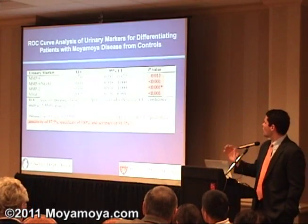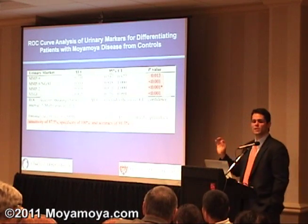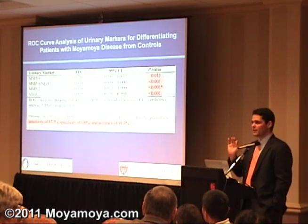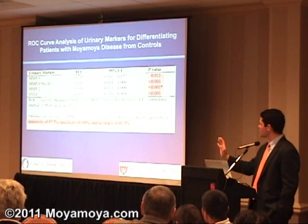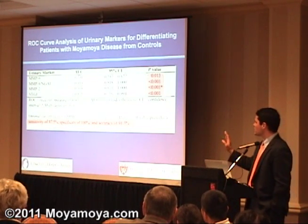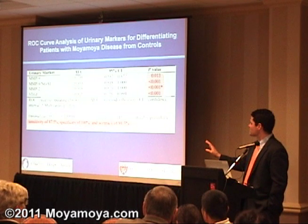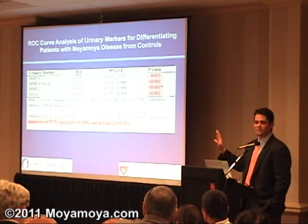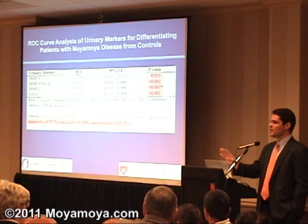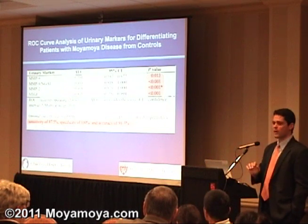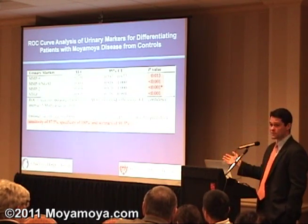One thing that we found is that just by using a urine test, when you have the technicians blinded, run it through and just go by the numbers, we have a sensitivity of 87.5% and an overall accuracy of 9 out of 10 times being able to predict which urine is from a patient with moya-moya versus a patient that doesn't have it. And it's not perfect.